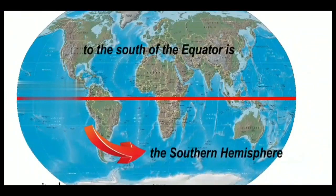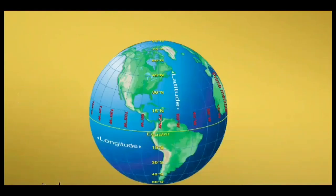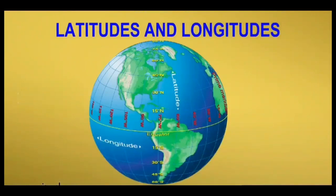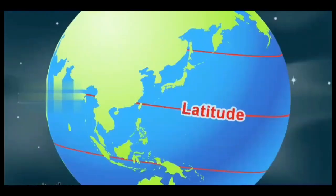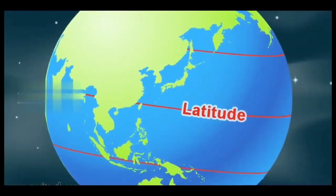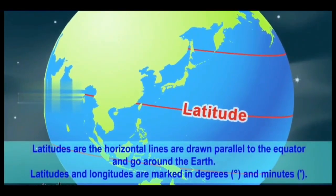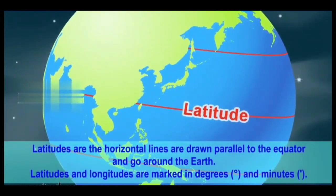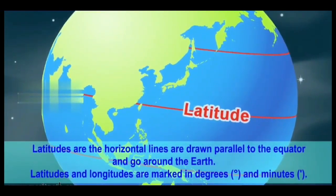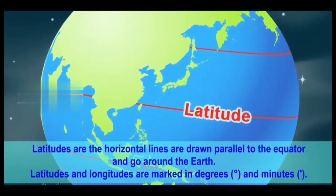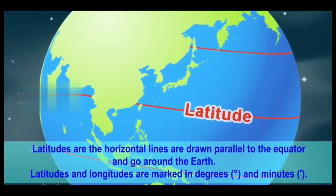The latitudes and longitudes. Latitudes. Latitudes are the horizontal lines drawn parallel to equator and go around the earth. Latitudes and longitudes are marked in zero degrees and zero minutes.